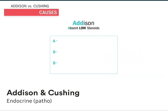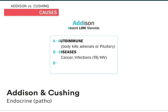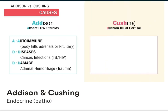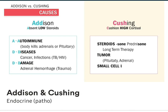Addison's is usually caused by our memory trick ADD. A for autoimmune disease, where the body basically kills the adrenals or pituitary — this is called a primary cause. Or secondary causes from diseases like cancer or infection like TB, and even trauma to the adrenals, like from a car accident or falling off a roof. On the other side, Cushing's is either caused by drugs from outside the body — an exogenous cause — usually from high steroid medication ending in -zone, like prednisone, often when giving high doses over time with inflammatory conditions like asthma, COPD, and rheumatoid arthritis. But high cortisol can also come from inside the body — an endogenous cause — like tumors on the adrenal or pituitary, and even small cell lung cancer. Big NCLEX tip — write that one down.